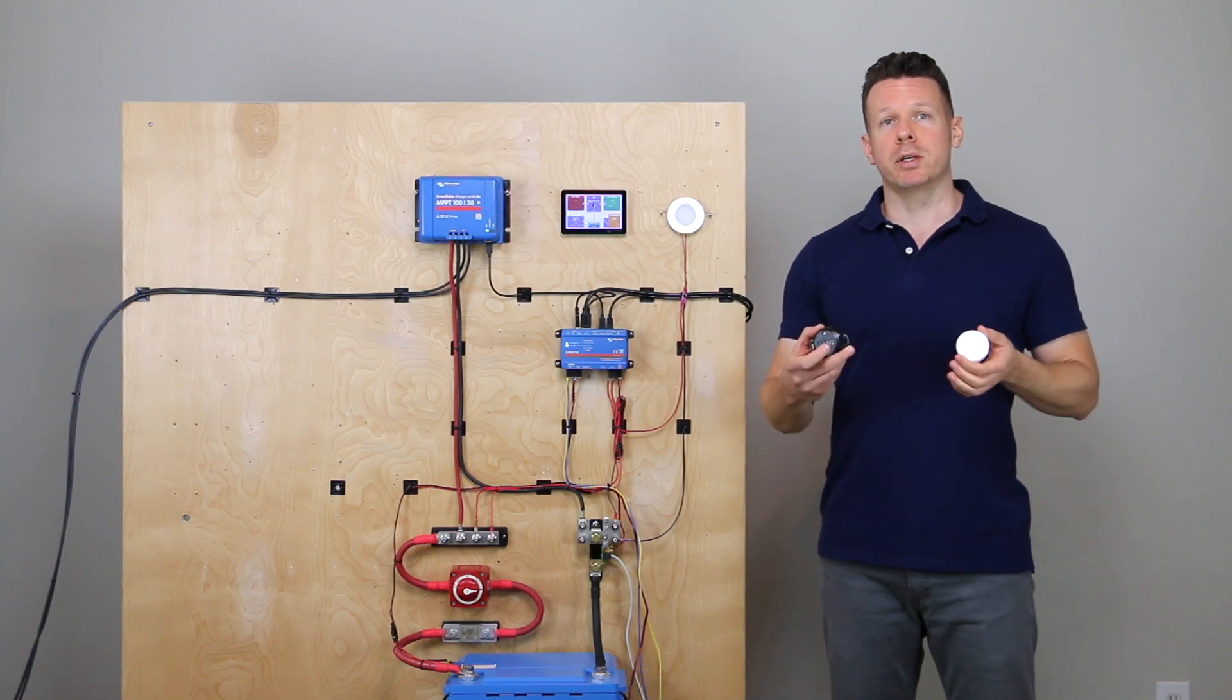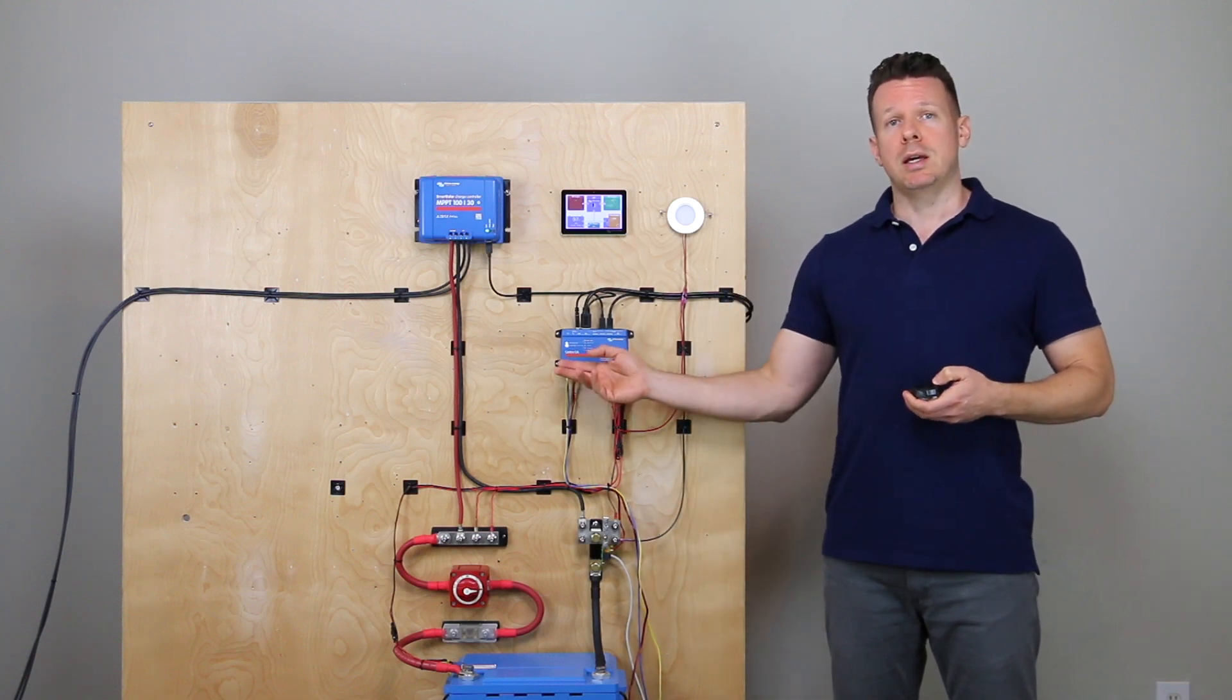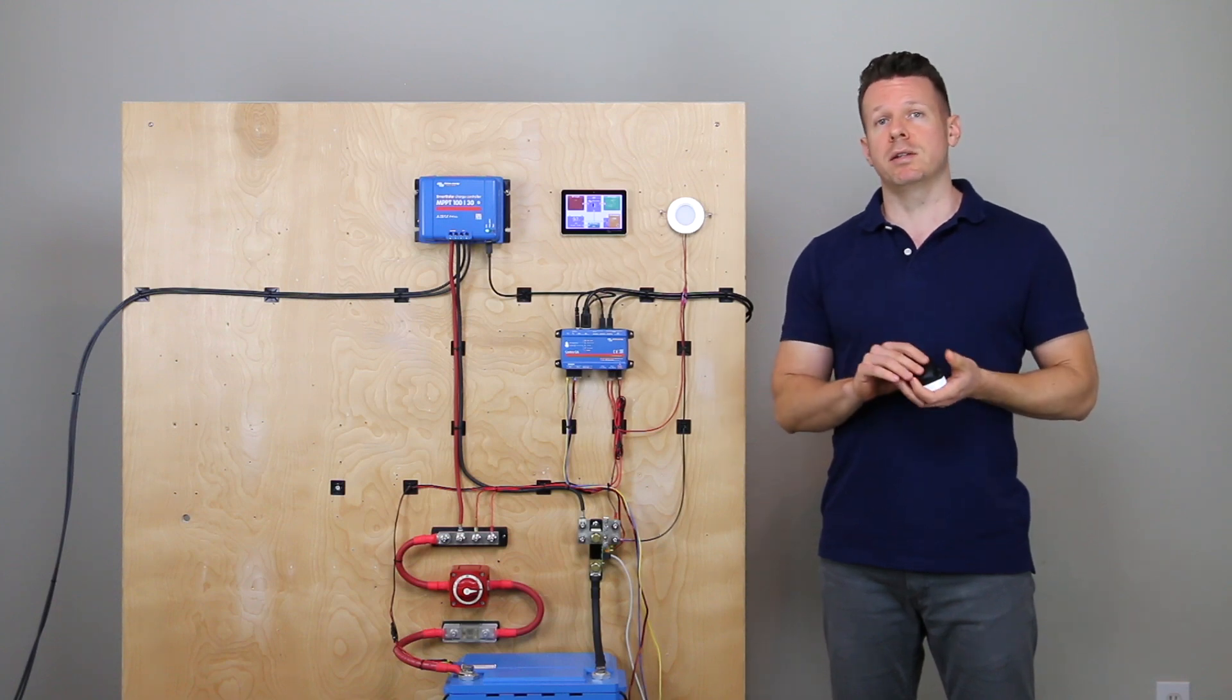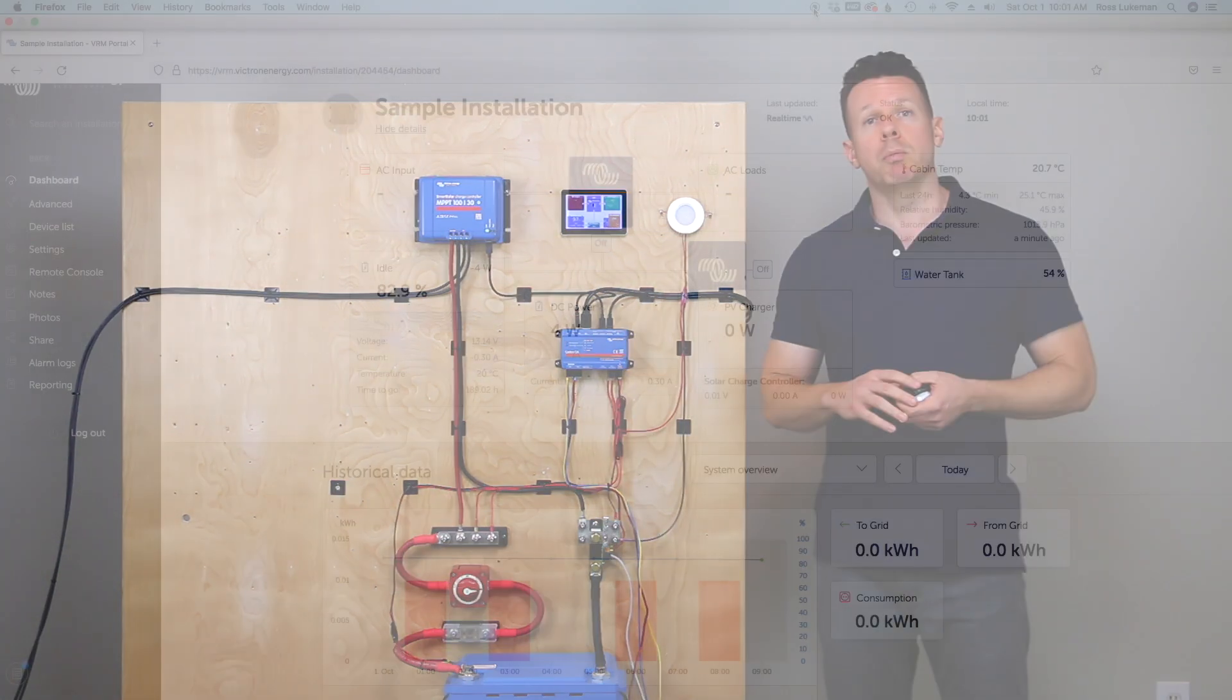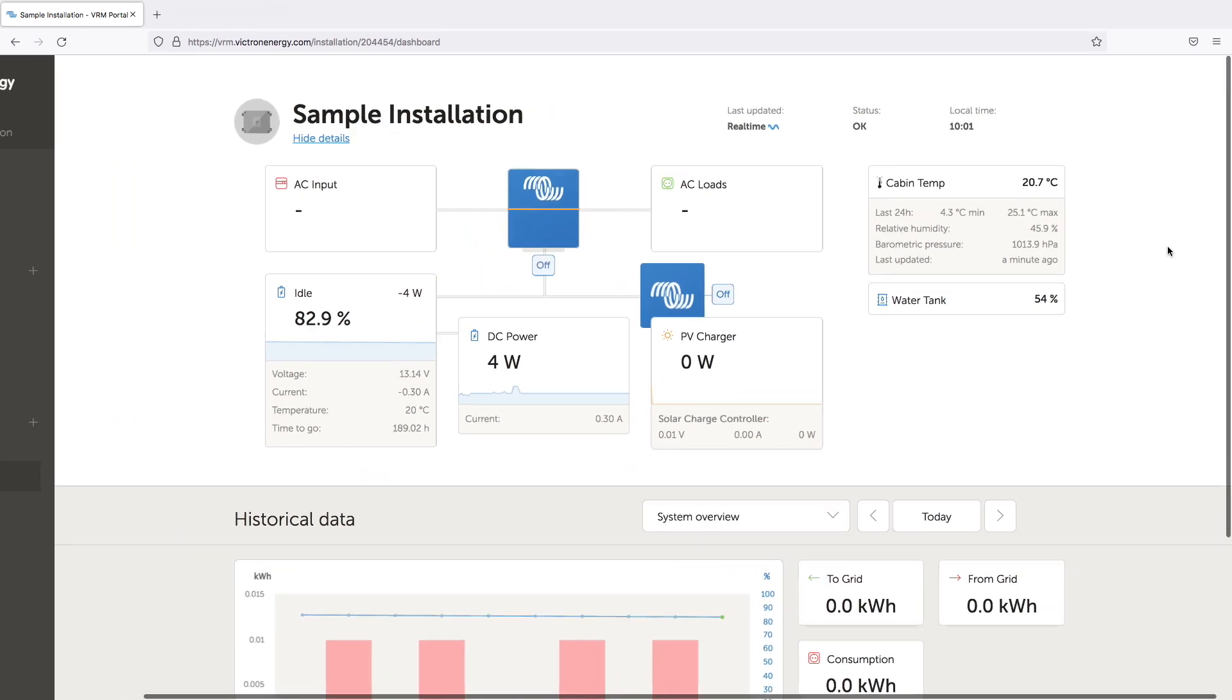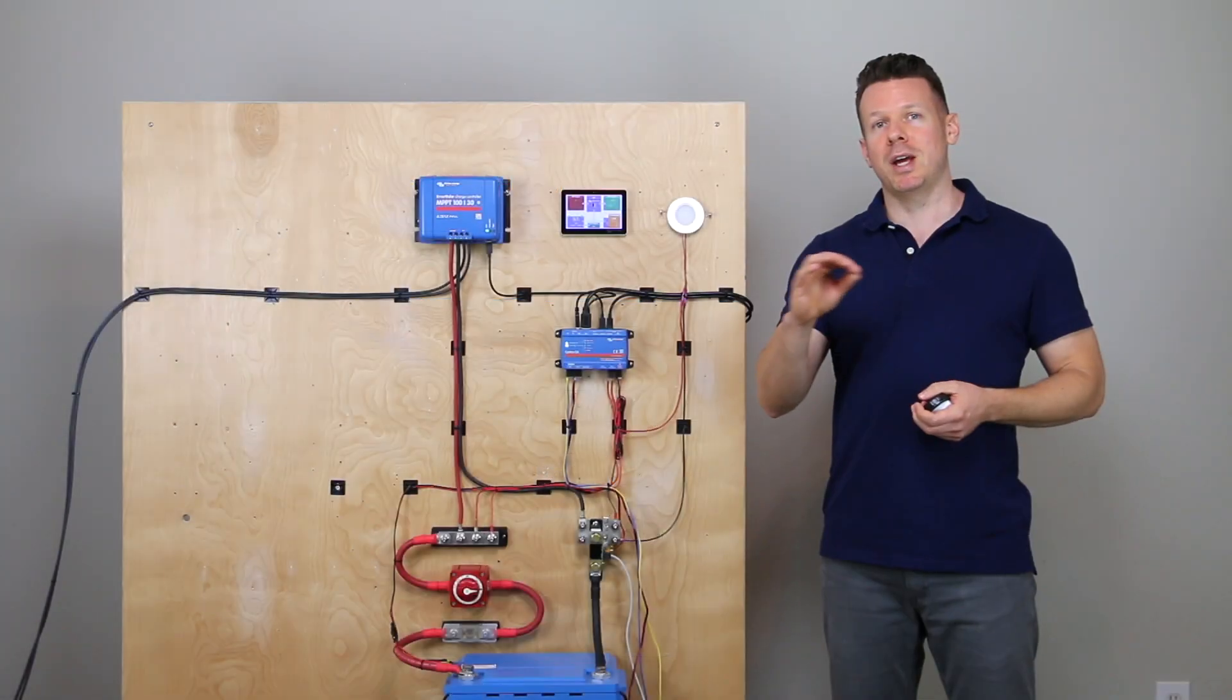Whatever you want, we can wirelessly bring in that data to the Cerbo GX. This was a recent firmware update where it can now take in data from Bluetooth LE or low energy devices and we can look at that data here locally on the Cerbo GX. If we're connected to the Victron remote management portal, we can also upload the sensor data to the portal and we can graph and see the temperature of our freezer over time and see from day to day what that temperature fluctuation is.